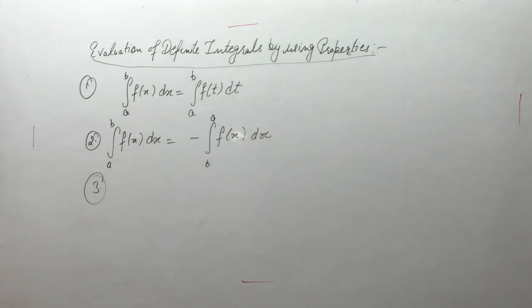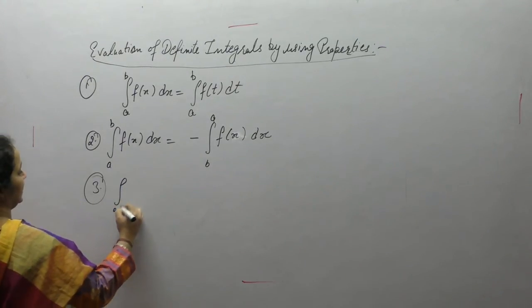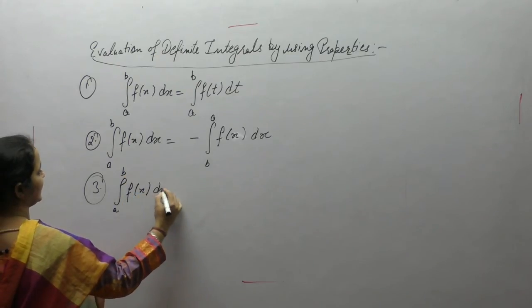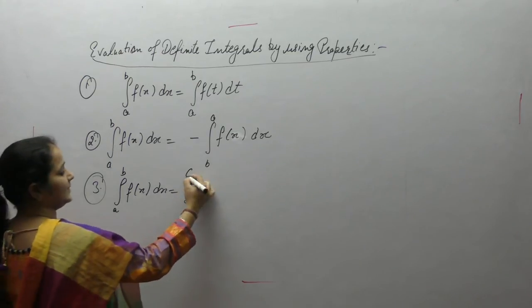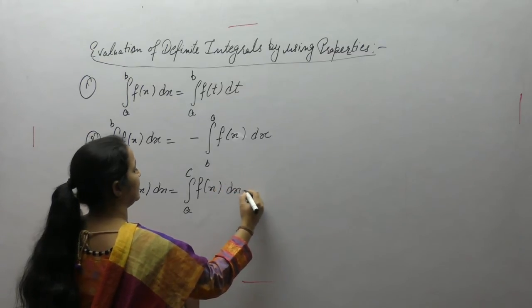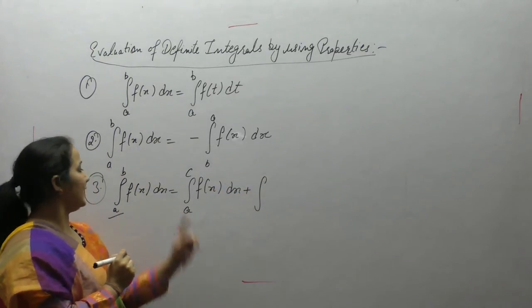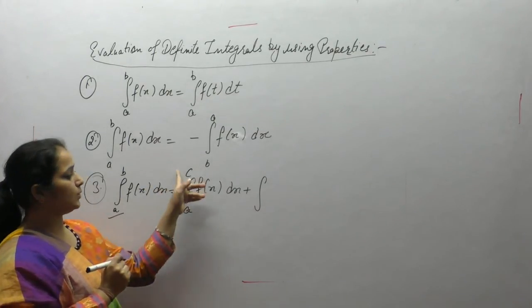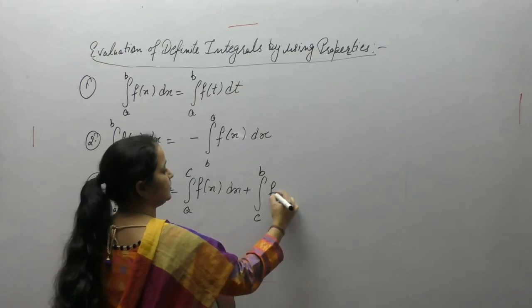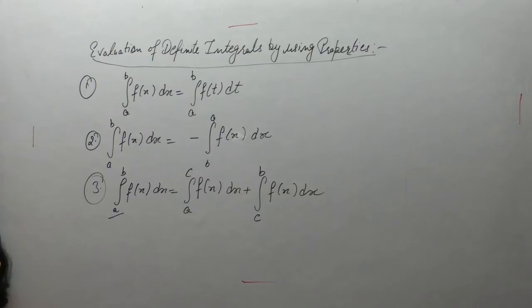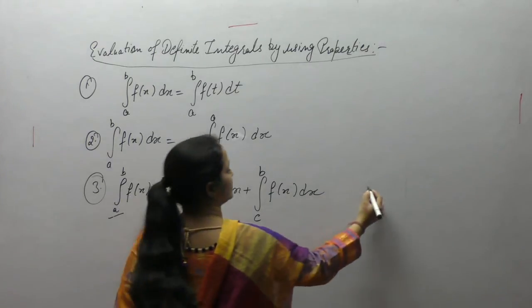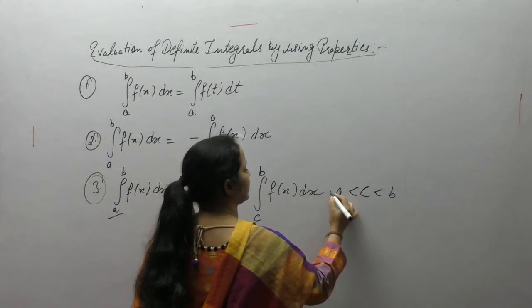The third property is the additive property: integral of a to b of f(x) dx, if some value c lies between the limits a and b, we can write this as the integral from a to c plus the integral from c to b of f(x) dx, where c lies between a and b.